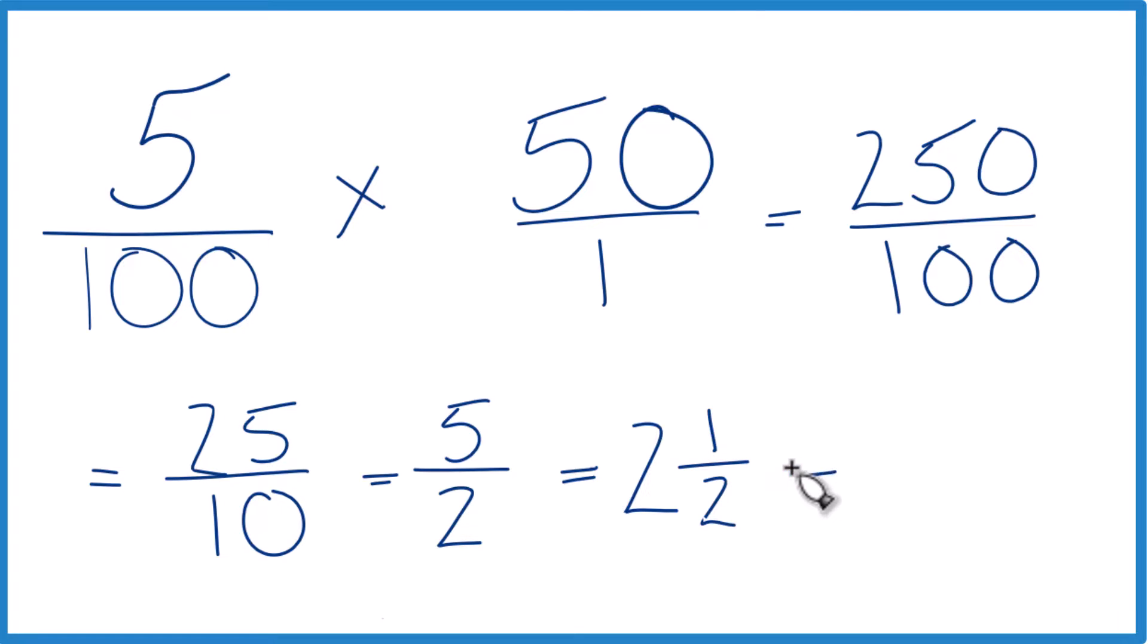Or you could change it to a decimal. 2 and a half, that equals 2.5. But that's it. 5% of 50. This is Dr. B. Thanks for watching.